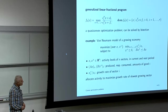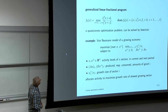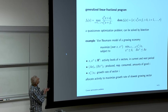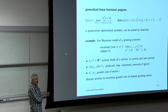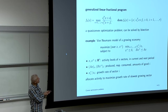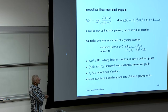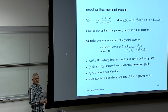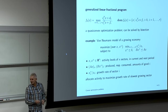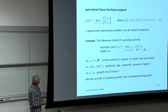A generalization is the so-called generalized linear fractional problem: the maximum of a bunch of linear fractional functions, which is quasi-convex. For this problem, the only known approach is bisection.